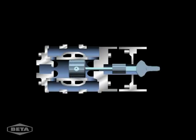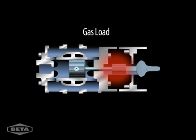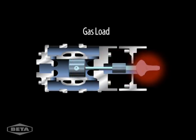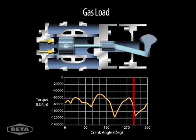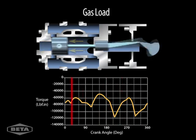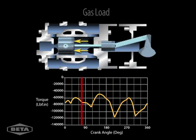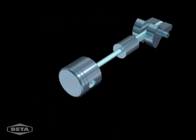One important torsional load is the gas load inside a reciprocating compressor. The gas load acts on the piston and is transmitted to the crankshaft. This chart illustrates the gas load from all the cylinders during one revolution of the crankshaft.